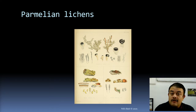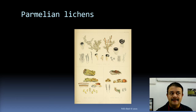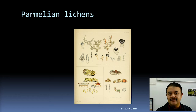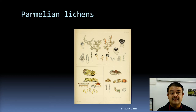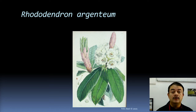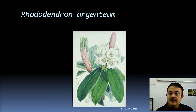When Hooker was in Sikkim, the king of Sikkim believed he was a British colonizer and had him imprisoned, causing the loss of all his samples. Not wanting to return to Sikkim, he went to Assam instead, where he collected many specimens — especially seeds of Himalayan rhododendrons — which he introduced to Kew Gardens. England now has several gardens of rhododendrons, most of which were originally collected from the Himalayas by Joseph Dalton Hooker. One of his famous collections is Rhododendron argenteum.